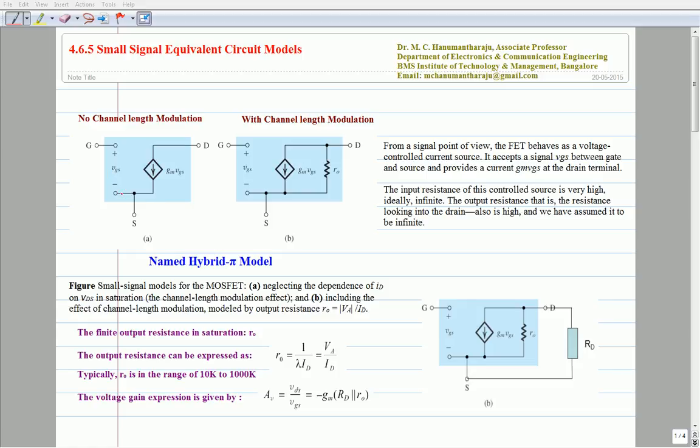The output resistance of the MOSFET looking from drain and source is also very high, but here we assumed it as a finite value.